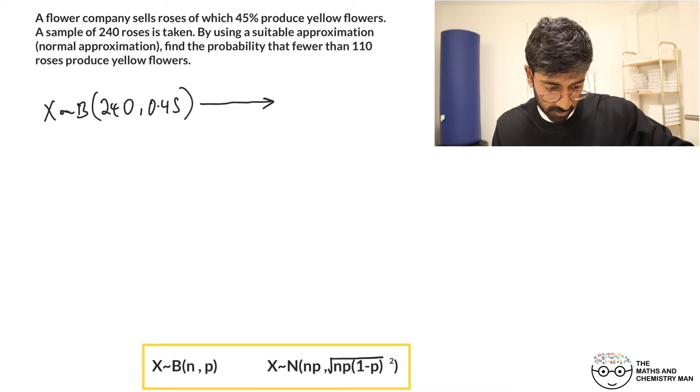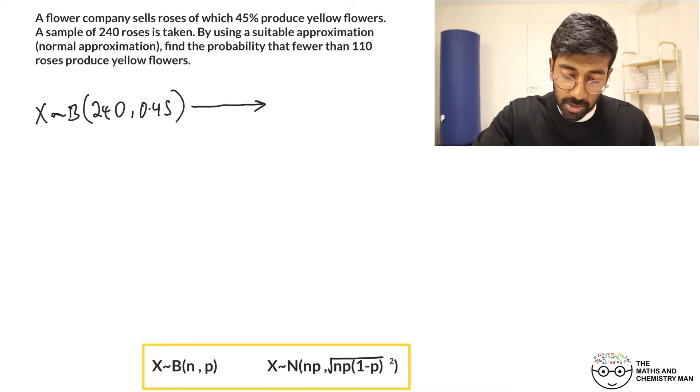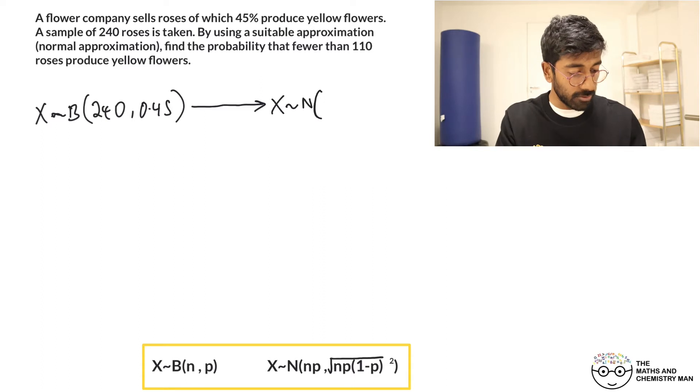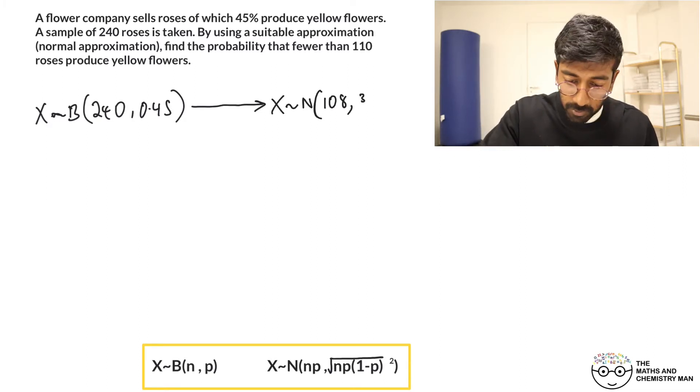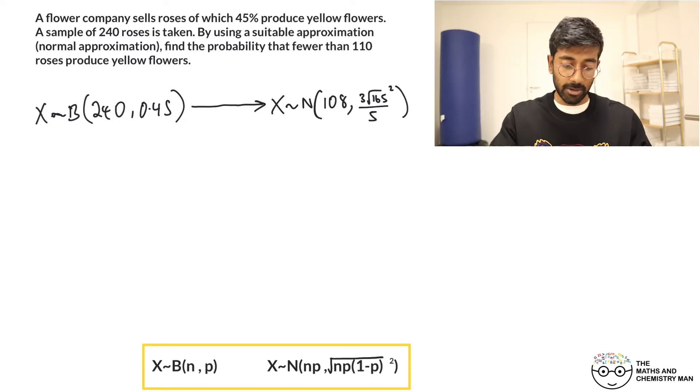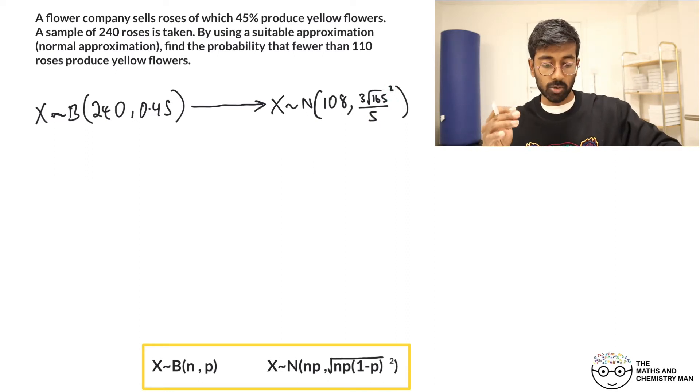So when we do approximate it to a normal distribution we do the following down here. That's why I put it in that yellow box, right? Super important. So let's just move this over here. Now if you've got this which is binomially distributed, we can say that it can be normally distributed where the mean is n times p. So we need 240 times by 0.45, that's going to be 108. And then we need to do the square root of, and that is n times p, so that's going to be 240 times 0.45 again times by 1 minus p this time, so times that by 0.55. Oh, horrible number. It comes out as I think 3 root 165 over 5, and you must put a little squared there on the end because this is my standard deviation. But remember when you write a normal distribution you put the standard deviation squared.